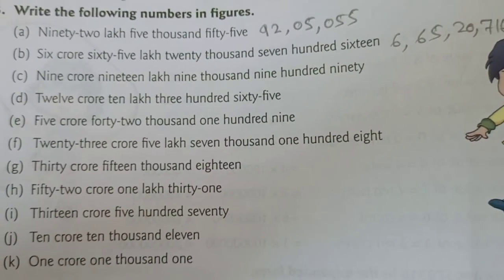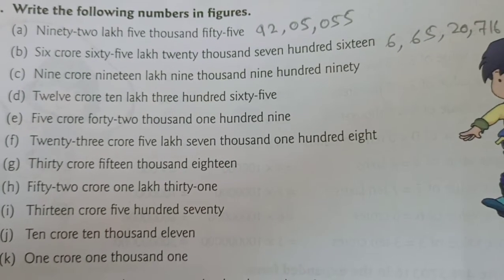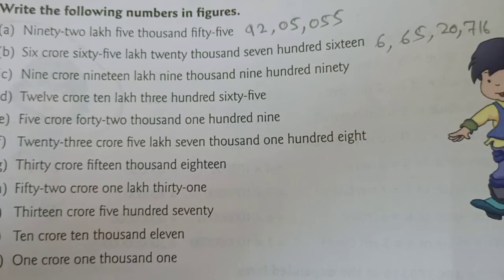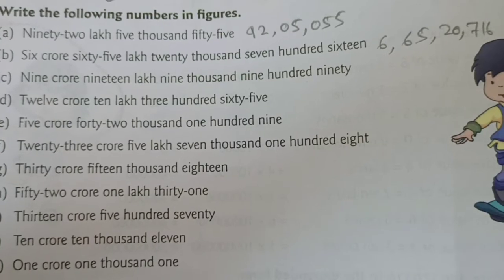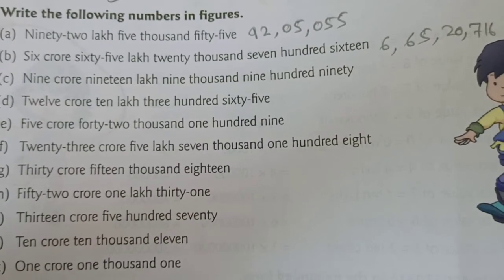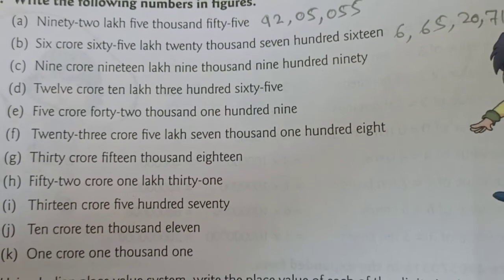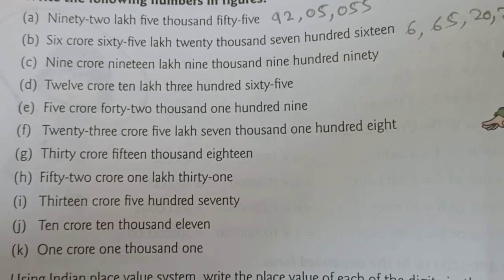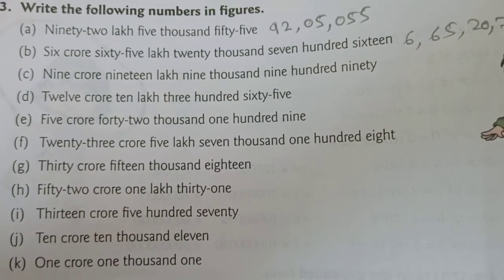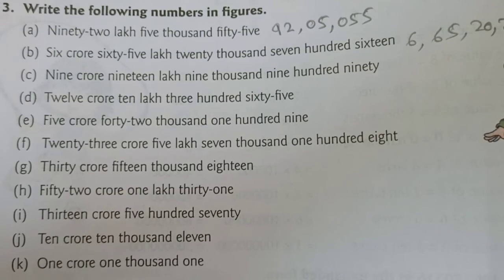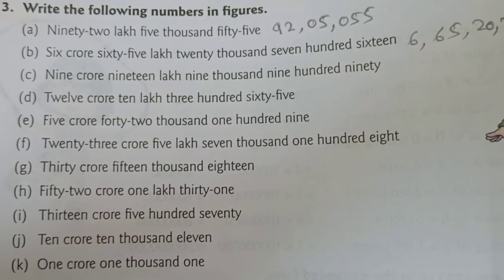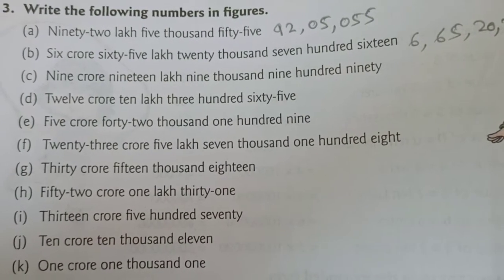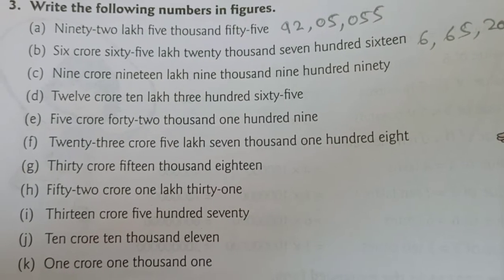Next: 6 crore 65,20,716. So 6 likhenge, comma, 65 likhenge, comma, 20 (for 20,000), comma, 716. Then C number: 9 crore 19,9990. So: 9, comma, 19 likhenge, comma, 9,000 ke liye — thousands period mein 2 places hote hain — toh 09 likhenge, comma, 990 likhenge.